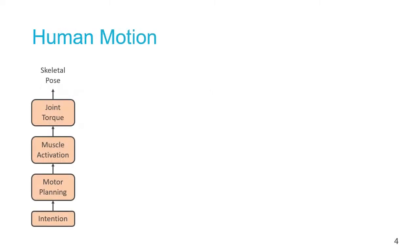If we take a step back and look at how humans produce motion, we view it as a hierarchical process, starting from intention through motor planning, muscle activation, that produces torque on the joints, which leads to the ultimate pose that is adopted.